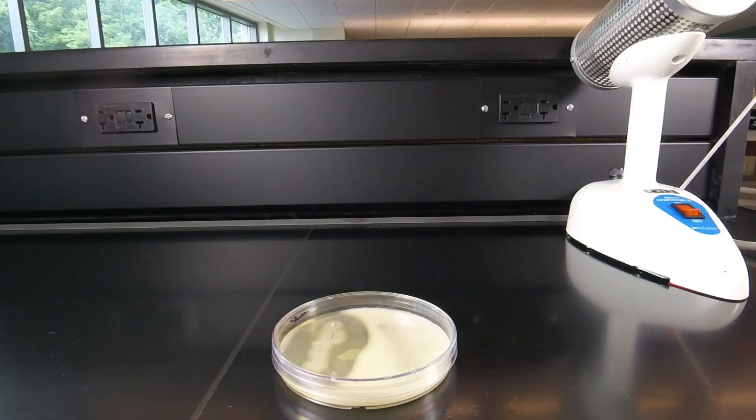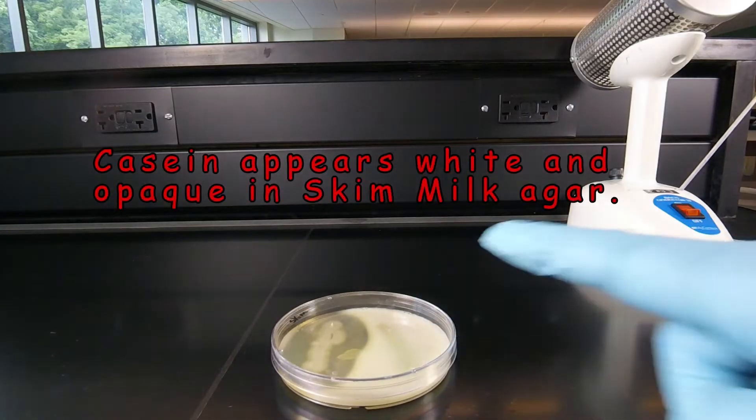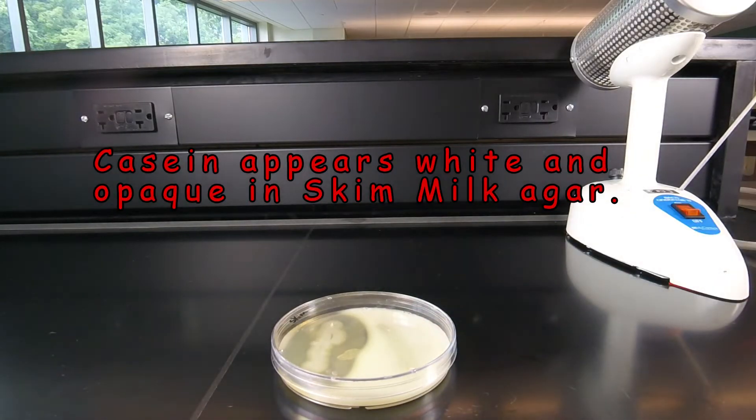It's casein, in fact, that gives milk its white opaque appearance. For this, we're going to be using skim milk agar, which contains the protein casein.